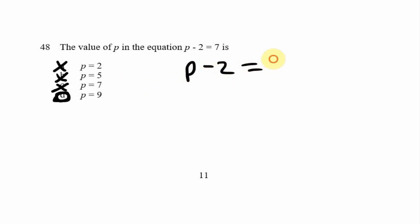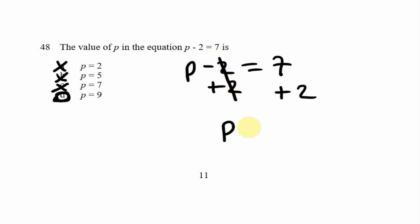Using the balancing equations method for question 48: we have p minus 2 equals 7. To isolate p, we do the opposite of subtracting 2, which is to add 2 to both sides. Minus 2 plus 2 cancels out, leaving p equals 7 plus 2, which is 9. So p equals 9, confirming option D. Both the trial and error method and the balancing method work fine.